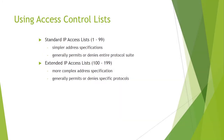Standard IP access lists use numbers in the range 1 to 99. They have simpler address specification and generally permit or deny an entire protocol suite. Extended IP access lists use numbers in the range 100 to 199, require more complex address specifications, and generally permit or deny specific protocol structures.